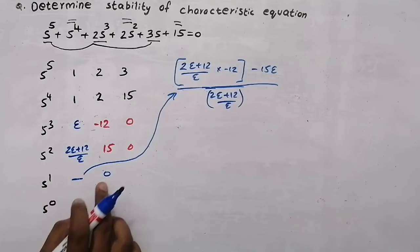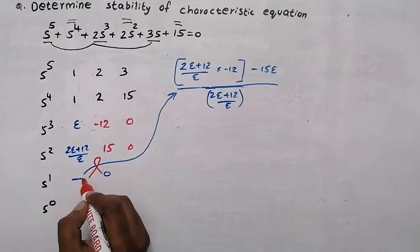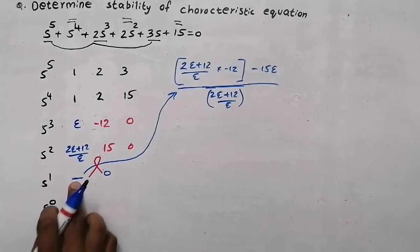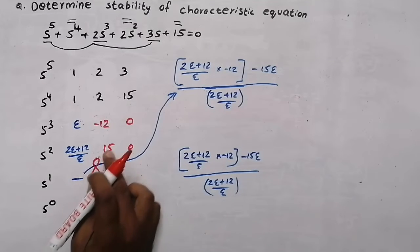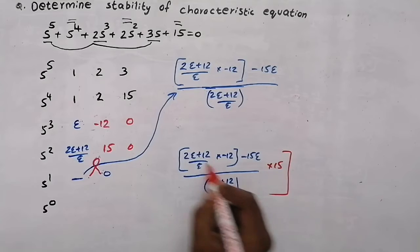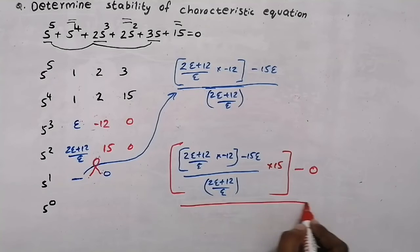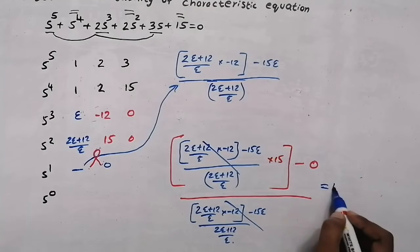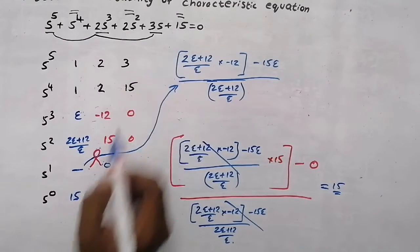Now, we got this element and this element. To find the final element, we will do the multiplication: this element into 15 minus this element into 0, all divided by the starting element. We can see these two are common and cancel, and the remaining value we get is 15. So the final element is going to be 15. This element and the last element in our characteristic equation will be the same: 15, 15.